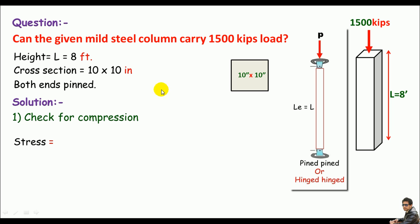Let's check the column in compression first. I need the stress by external load caused in the given column. The stress is of course just the load or force divided by the area. The load is 1500 kips divided by the cross sectional area. The cross section of the given column is just a square.